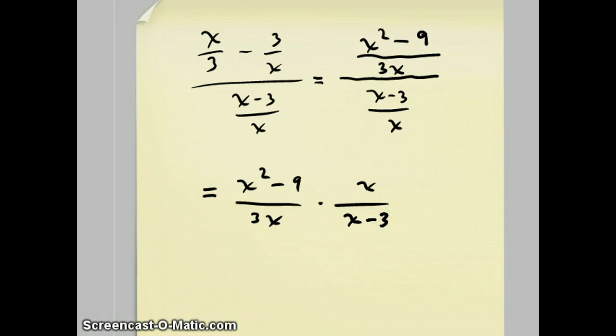And now, we're going to reduce these fractions. And in order to do that, I'm going to factor the x squared minus 9 into x minus 3 times x plus 3. The x minus 3's cancel, and this x cancels out with that x. And all that remains on top is x plus 3 and 3 on the bottom, which is the answer to that question.